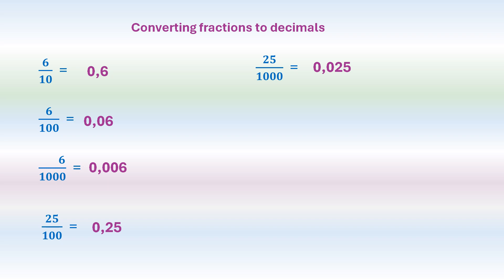Now let's look at something different — where we cannot simply multiply the denominator to make 100 easily. Say you got 14 out of 25 on a maths test. We ask: how many 25s go into 100? We can multiply 25 by 4 to make 100. Whatever we do to the denominator, we do to the numerator — so we multiply both by 4. 14 times 4 is 56 and 25 times 4 is 100. The 1 is a comma, we add a 0 before it, and our numerator is 56 — so it's 0.56.